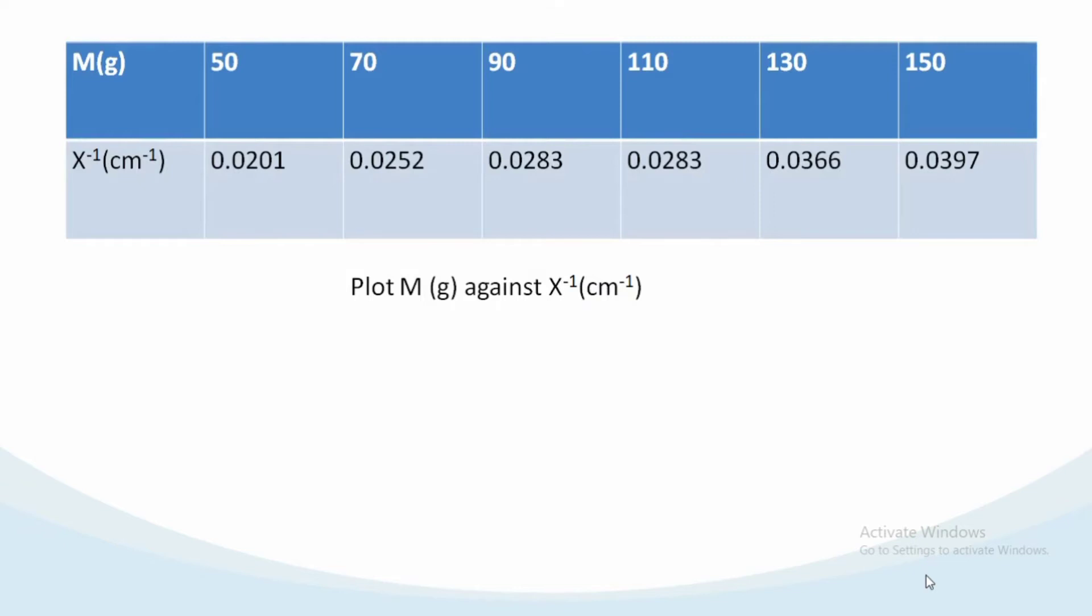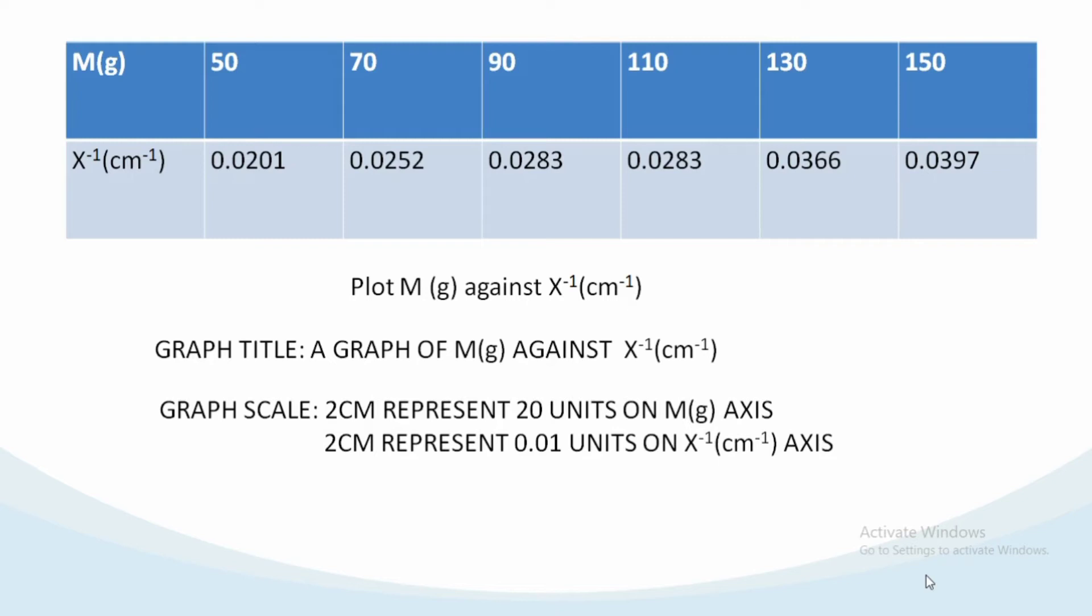The first table is talking about plot a graph of mass in grams against inverse of distance in centimeter X^-1. The values are 50, 70, 90, 110, 130, and 150. So you are thinking of what kind of scale can you find all these values. The graph title should be a graph of mass in gram against inverse of distance. The scale will be 2cm to represent 20 units on M(g) axis and 2cm to represent 0.01 units on X^-1(cm^-1) axis.